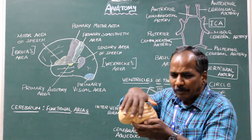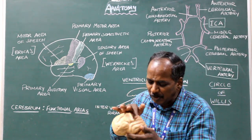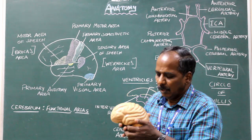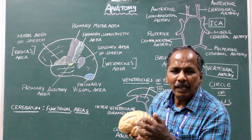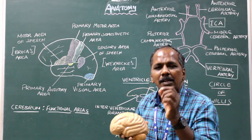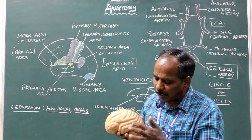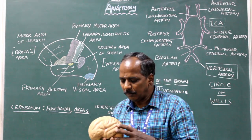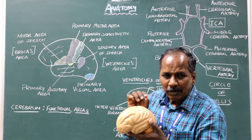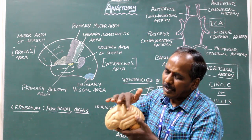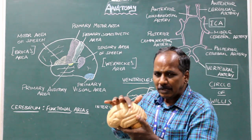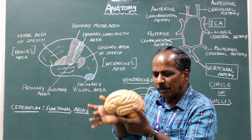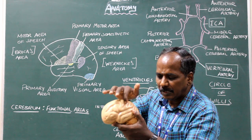The surface of the cerebrum has a number of grooves and elevations. The grooves are known as sulci, singular sulcus, and the elevations are known as gyri, singular gyrus. The central sulcus is a groove present in the center between the frontal and occipital poles.